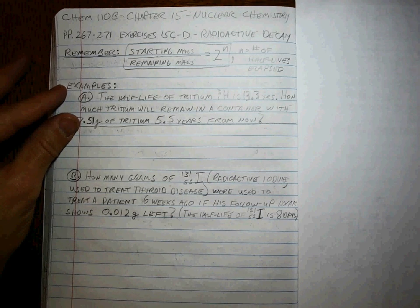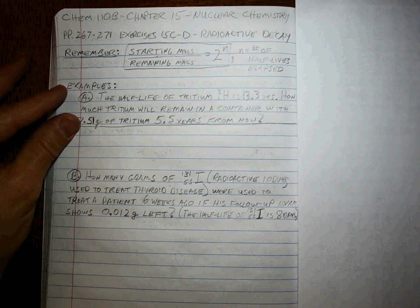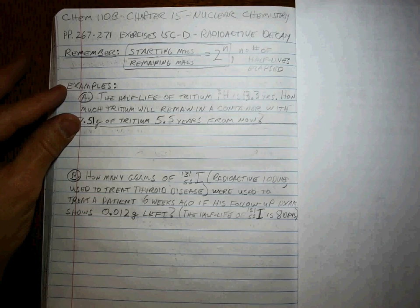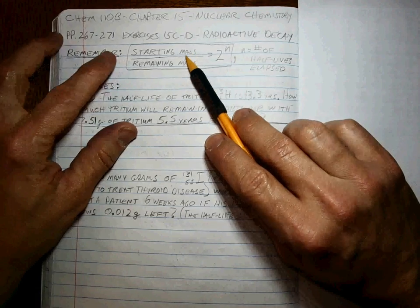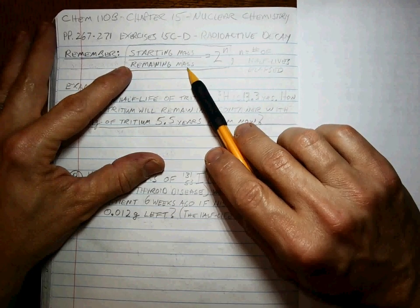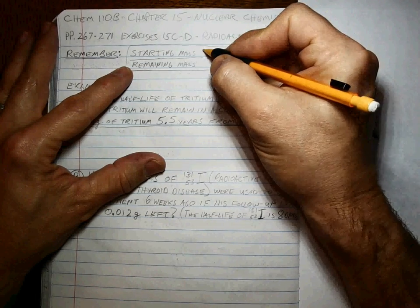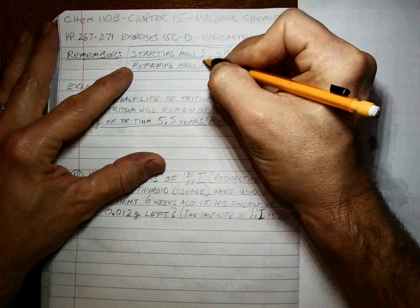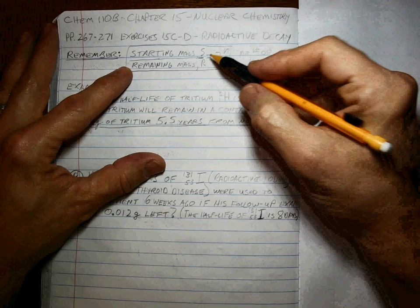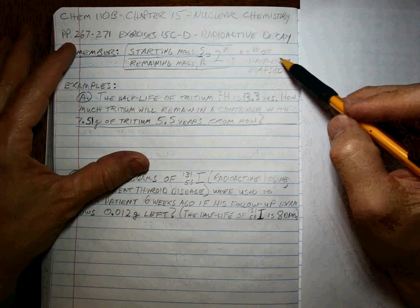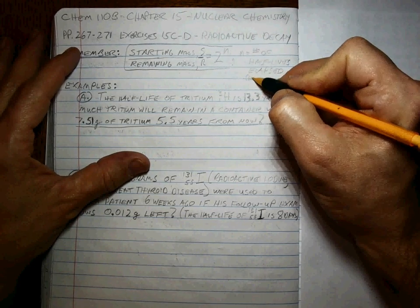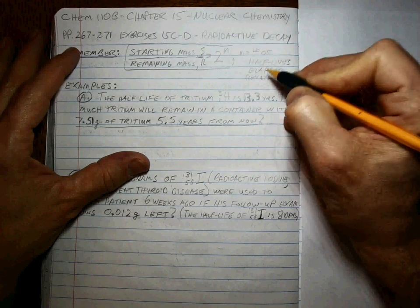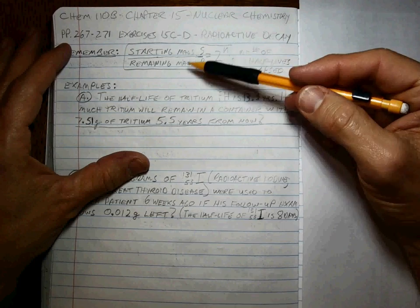There are some isotopes that just spontaneously fall apart, their nuclei split apart and form different materials. This is called Radioactive Decay. The formula that you have to remember is that the starting mass of this radioactive isotope divided by the remaining mass of this radioactive isotope, in other words S over R, is equal to 2 to the N. And N is the number of half-lives elapsed, or gone by, the period of time between the starting and the remaining time.